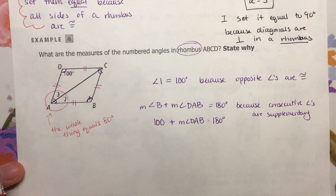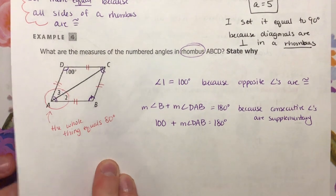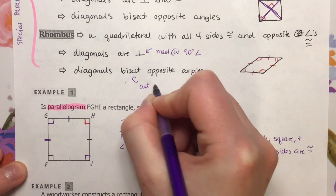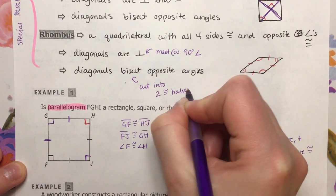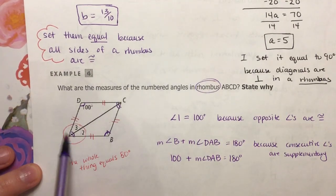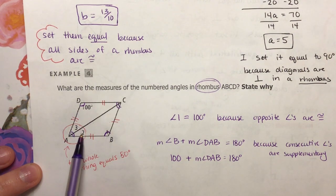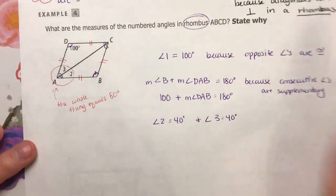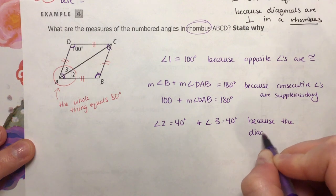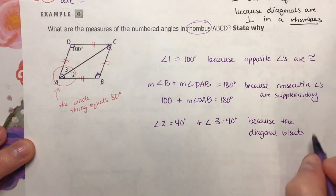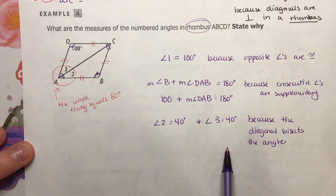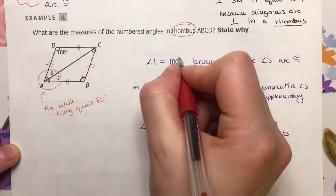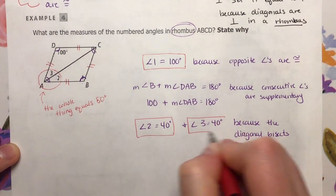So we know what angle 2 plus angle 3 is, but what is each one individually? Diagonals bisect opposite angles — the word bisect means to cut into two congruent halves. So if the whole angle equals 80 degrees and I know it's being bisected, angle 2 is equal to 40 degrees and angle 3 is equal to 40 degrees because the diagonal bisects the angle. We already knew it needed to be 80 degrees based off of consecutive angles being supplementary. So angle 1 is 100, angle 2 is 40, and angle 3 is 40.